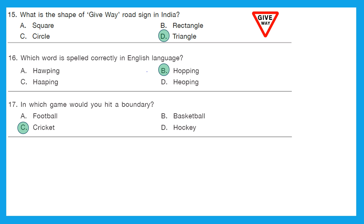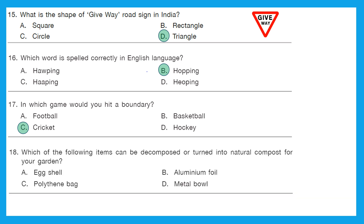Question 18: Which of the following items can be decomposed or turned into natural compost for your garden? Option A — eggshell — yes, it can be decomposed. Option B — aluminium foil — no. Option C — polythene bag — no. Option D — metal bowl — no. The right answer is option A, eggshell.